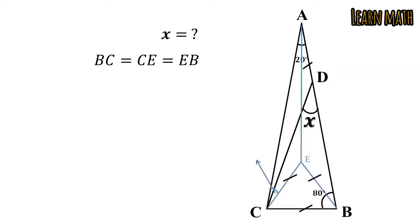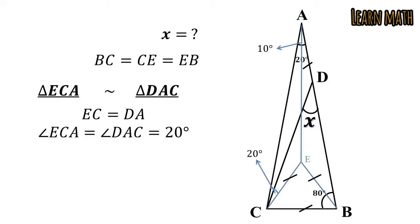In triangle ACE, this angle is 20 degrees because the angle ECB is 60 degrees and this angle is 10 degrees. It's clear because we draw the bisector. Now look at the triangle ECA and triangle DAC. These two triangles are similar. Why? Because the sides EC and DA are equal. Similarly, angle ECA is equal to angle DAC. Both are 20 degrees and the side AC is common in both the triangles. So AC is equal to AC. Now by side-angle-side, these two triangles are similar.